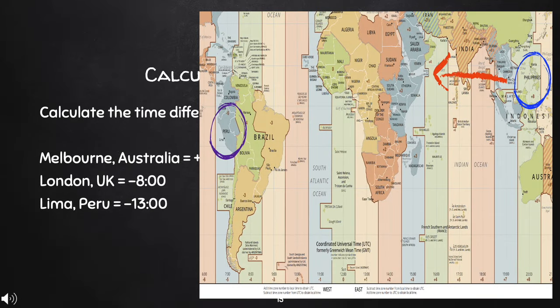Let us now calculate the difference between the Philippines and Lima, Peru, in South America. The Philippines is at plus 8 UTC, while Lima, Peru is at minus 5 UTC. Since we are moving towards the left — from the Philippines to Peru — the Philippines is ahead of Peru. We will add 8 plus 5, which is 13. And since we are ahead, we put a negative sign, so the difference is negative 13.